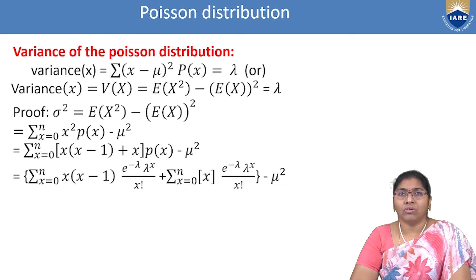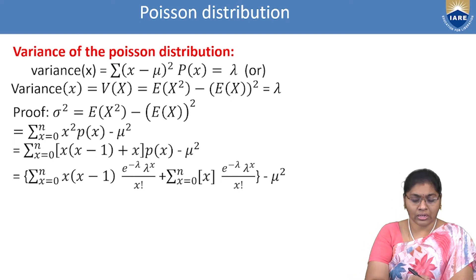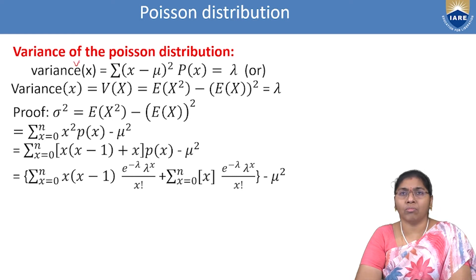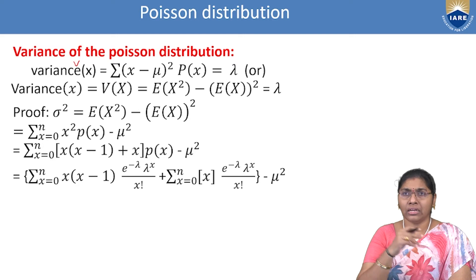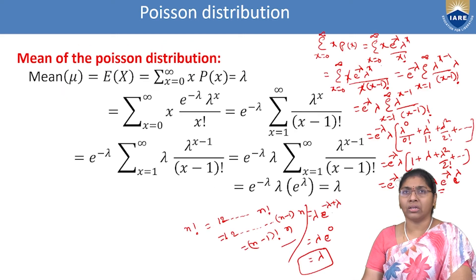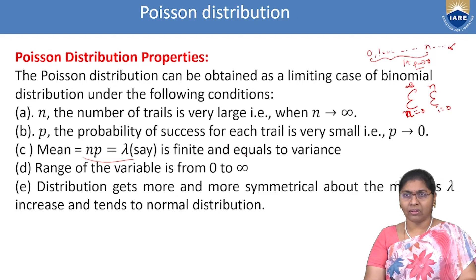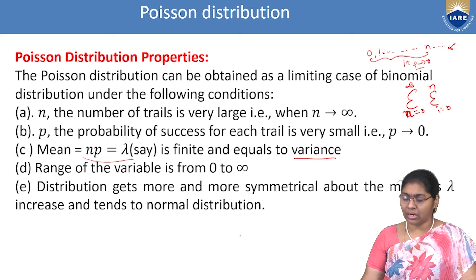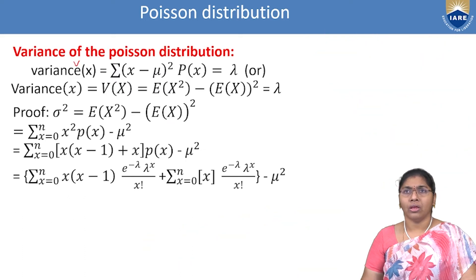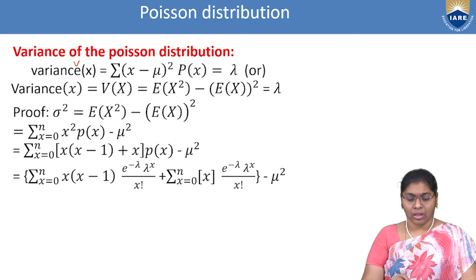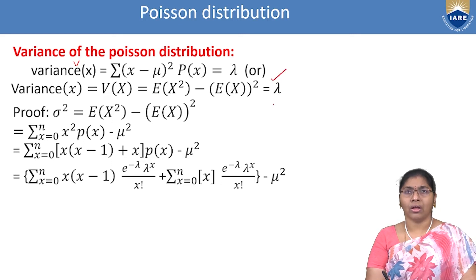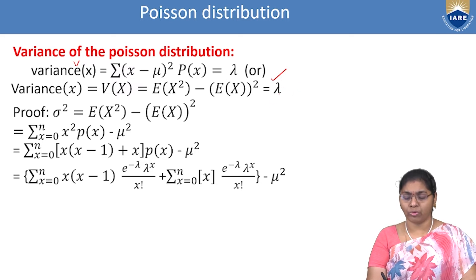Variance of the Poisson Distribution: V(X) = Σ(x − μ)² · P(x), which also equals λ. From the property already established, mean = np = λ = variance since it is a finite series. Using the formula V(X) = E(X²) − [E(X)]².